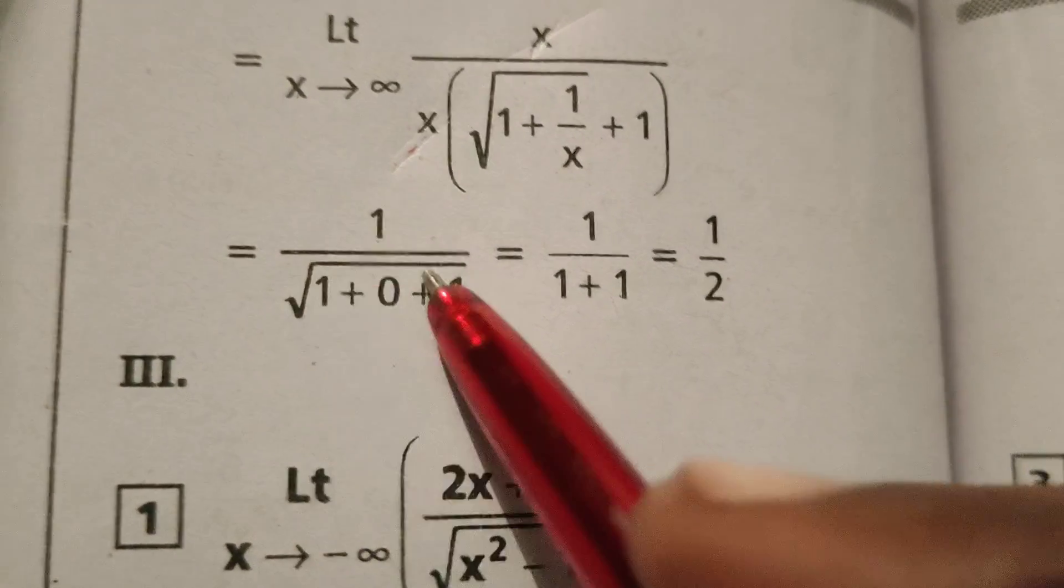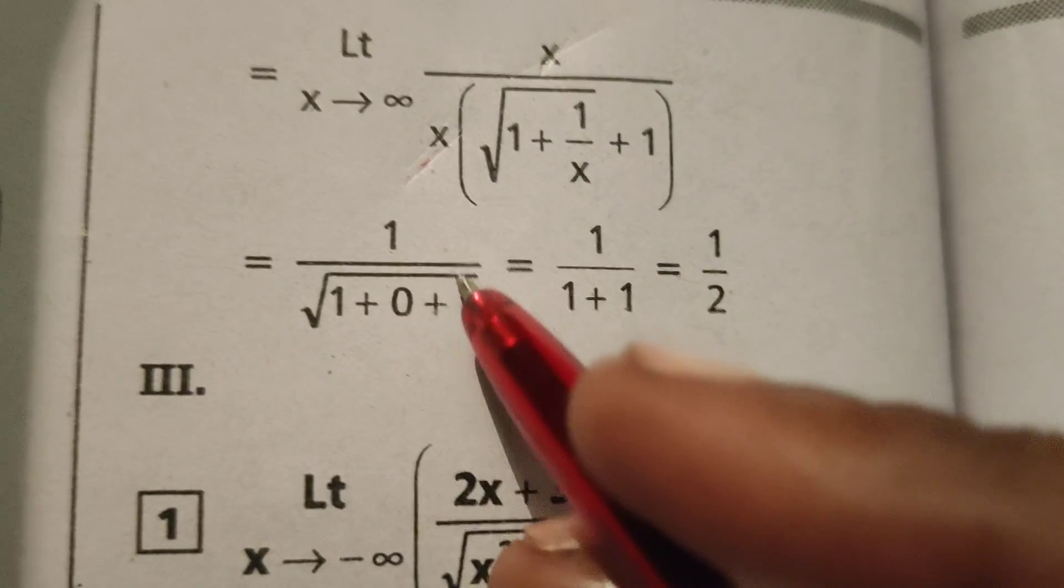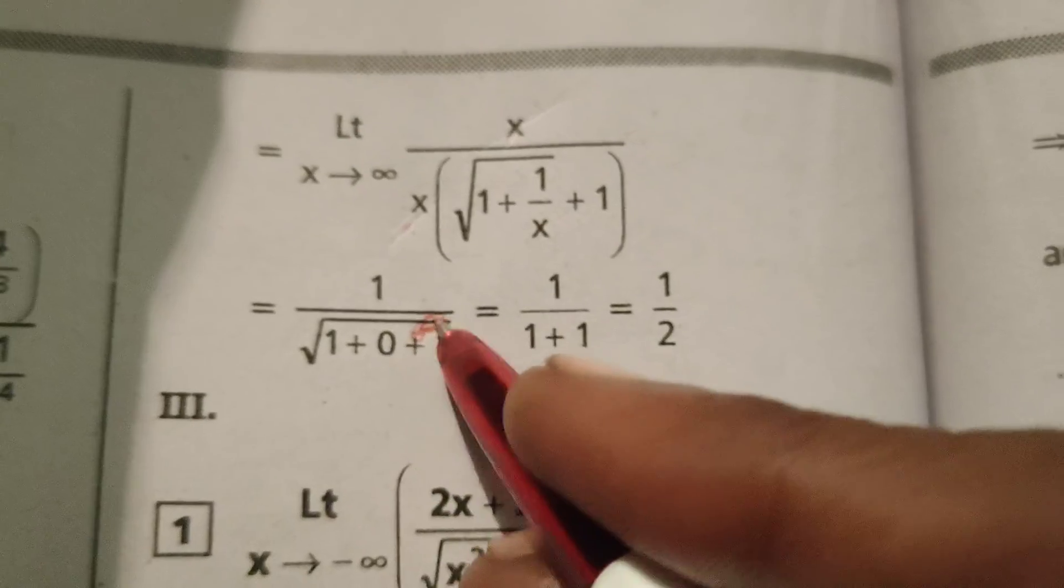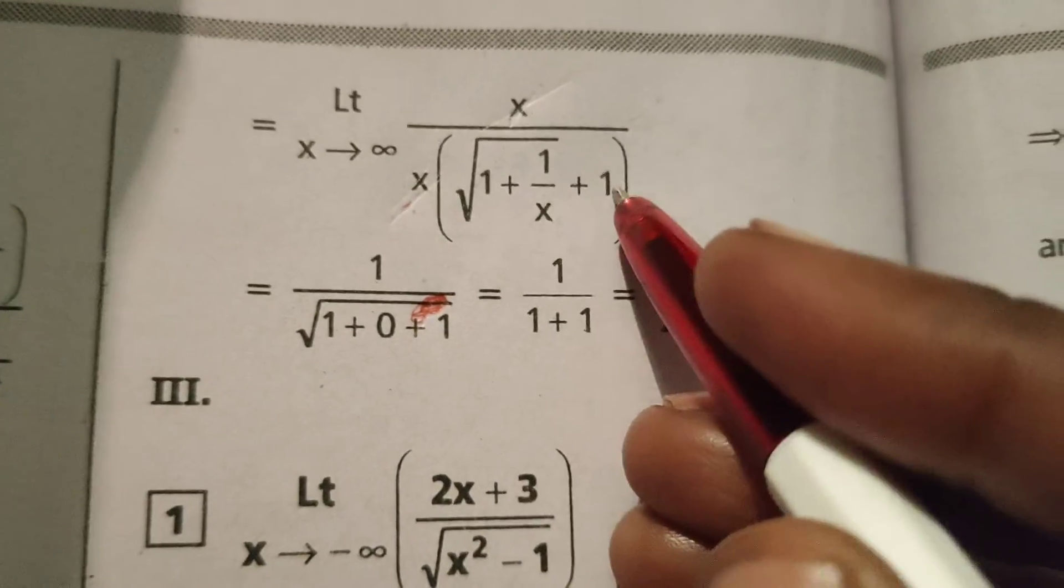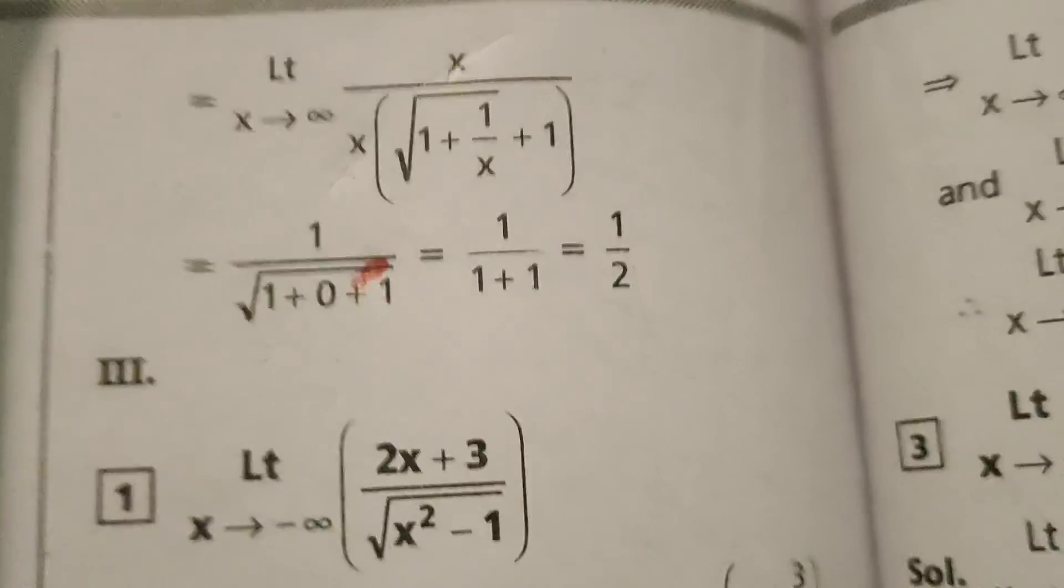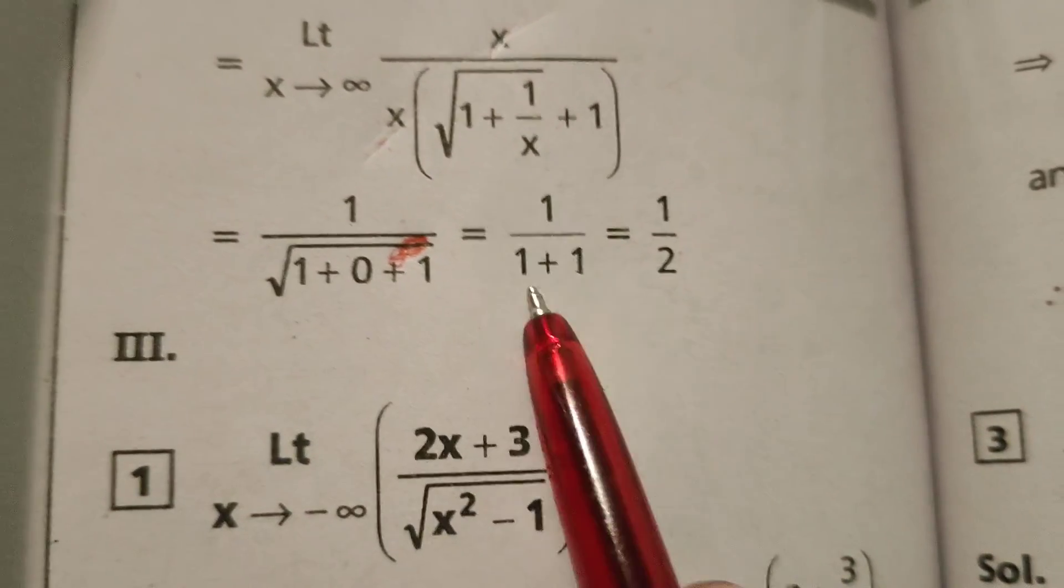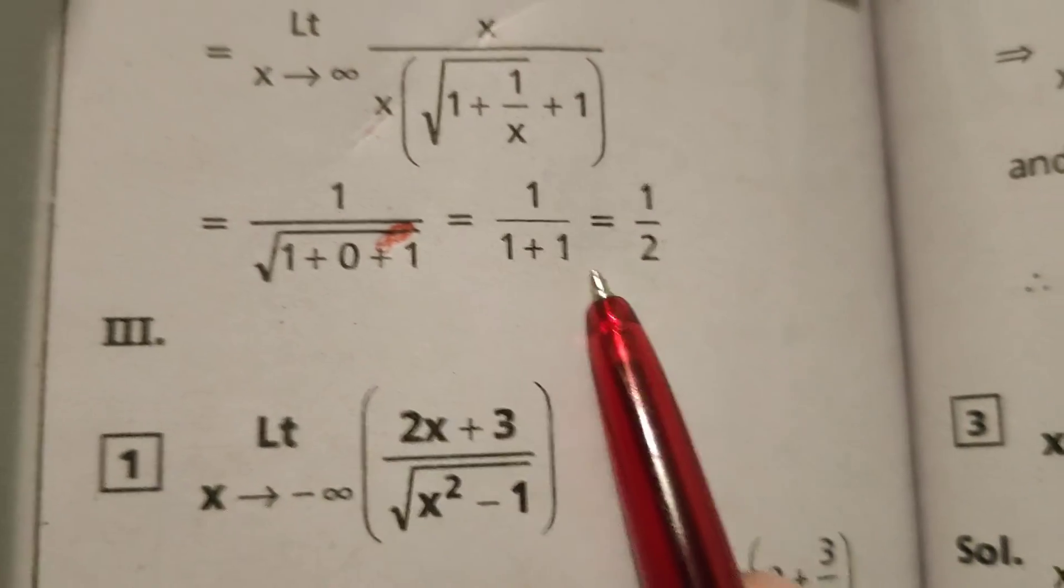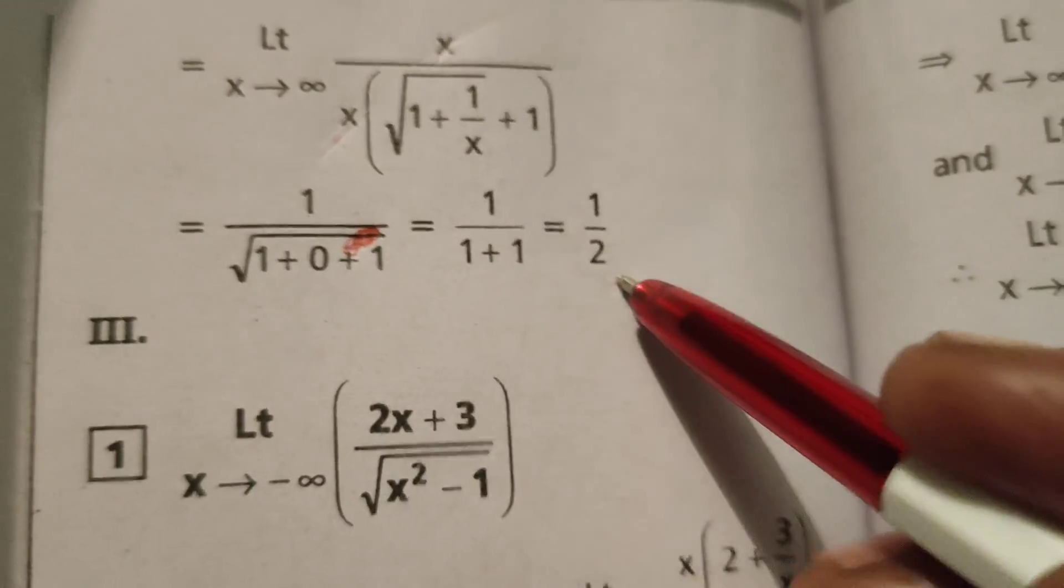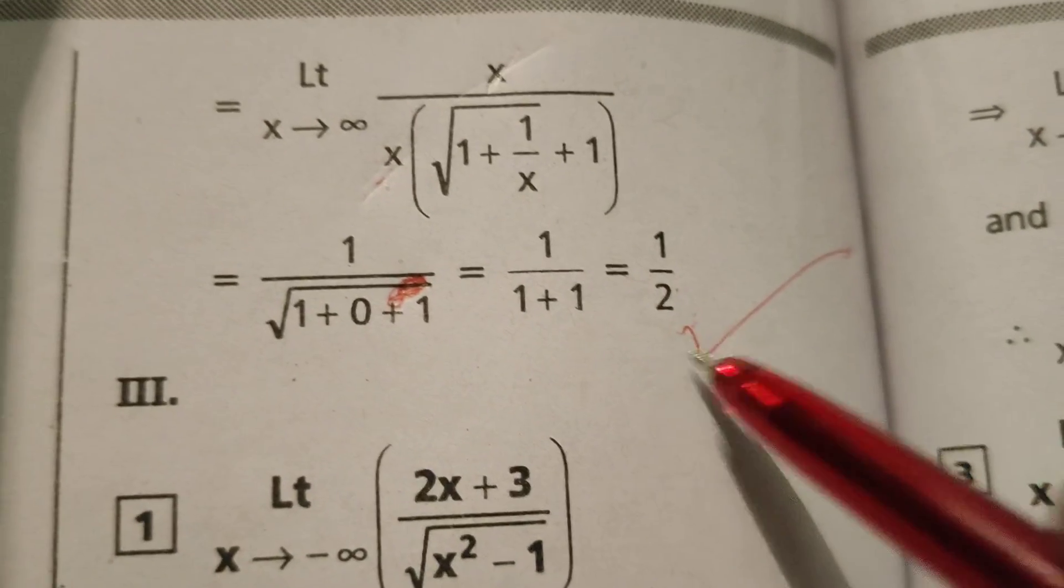1 by root of 1 plus 0 plus 1. Root of 1 plus 0 plus 1. Root 1 means 1, 1 plus 1 means 2. Answer will get 1 by 2.